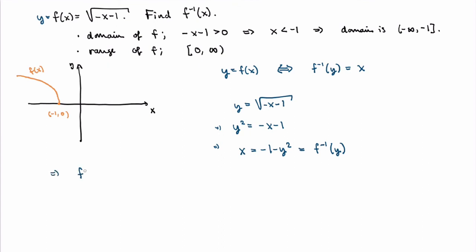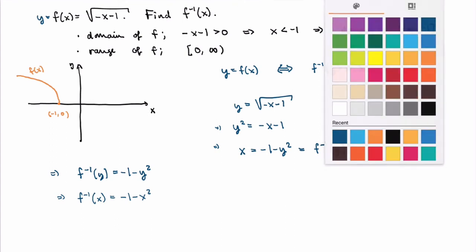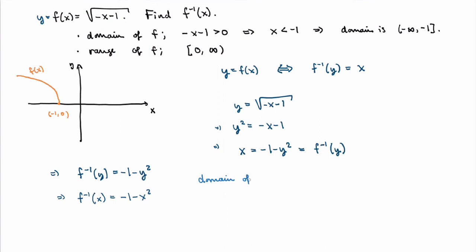The inverse function as a function of y is −1 − y². Since we prefer to write functions in terms of x, we exchange x and y, giving f⁻¹(x) = −1 − x². The domain of the inverse equals the range of f, which is all non-negative numbers, and the range of the inverse equals the domain of f, which is x ≤ −1. This is important: even though −1 − x² is defined for all real x, the inverse function is only valid for x ≥ 0.